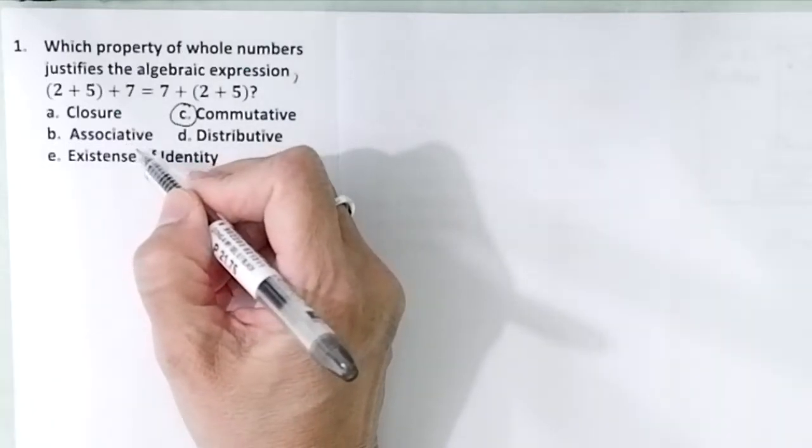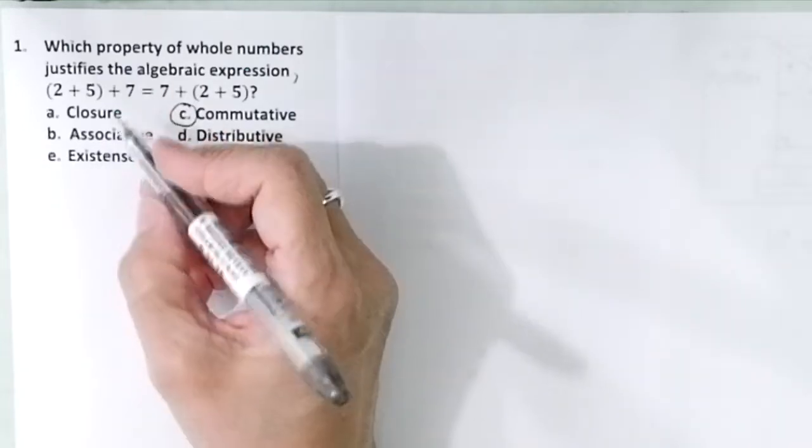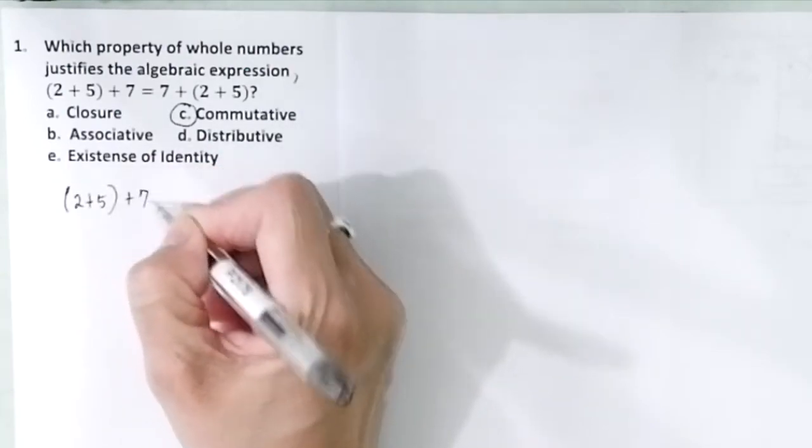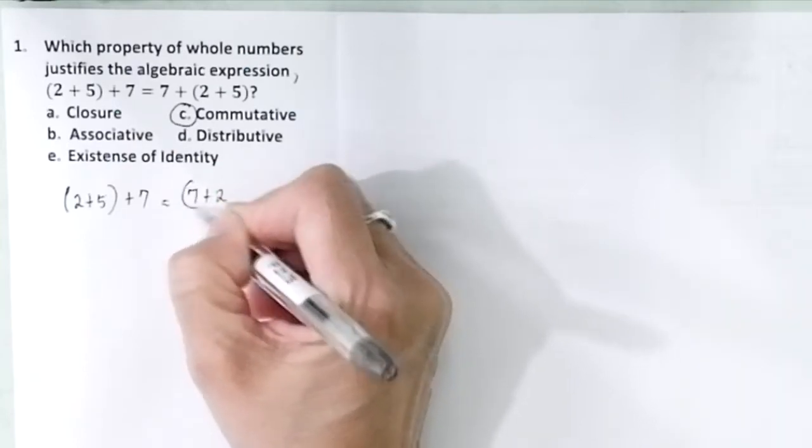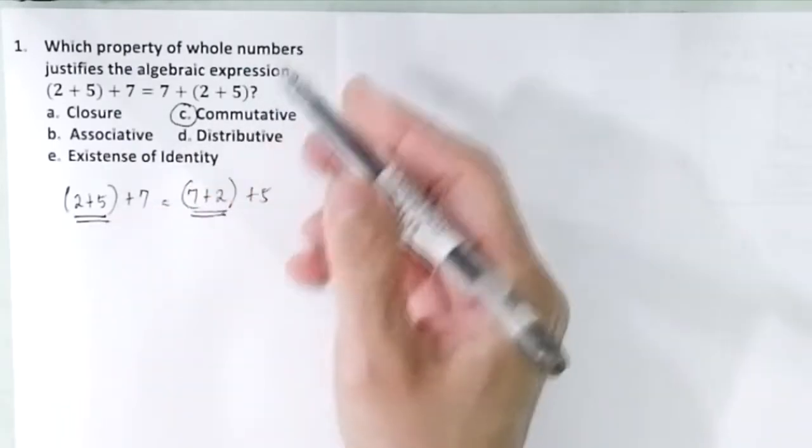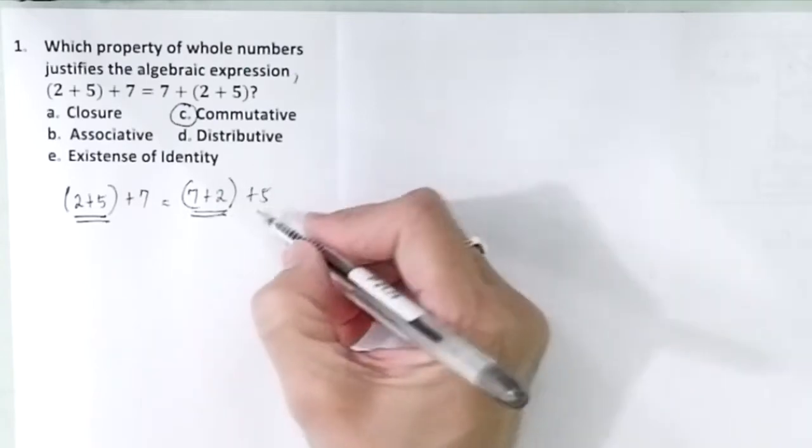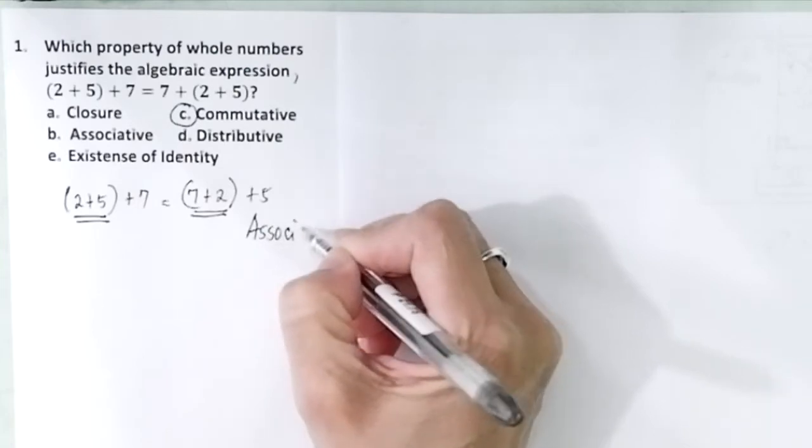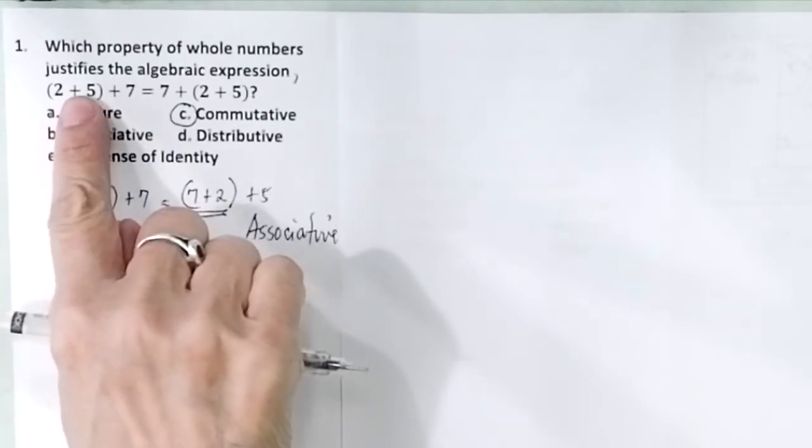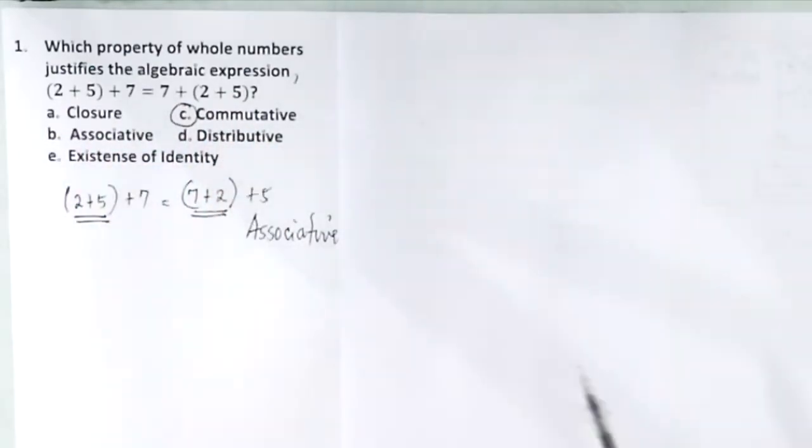Whereas associative, many students in my review center make a mistake. They always answer associative. It is wrong. Remember, associative property states that, for example, 2 plus 5 plus 7 is equal to 7 plus 2, parenthesis plus 5. You see, the elements inside the group were changed. That is associative property. But here, the 2 plus 5 is still 2 plus 5 on the other side. So there was only a change in the order.